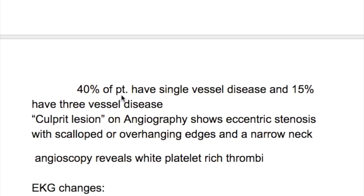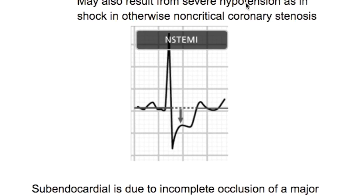40% of patients have single vessel disease and 15% have three vessel disease. The culprit lesion on angiography shows eccentric stenosis with scalloped or overhanging edges and a narrow neck. Angioscopy reveals platelet-rich thrombi. Subendocardial infarction may also result from severe hypertension or shock in otherwise non-critical coronary stenosis.